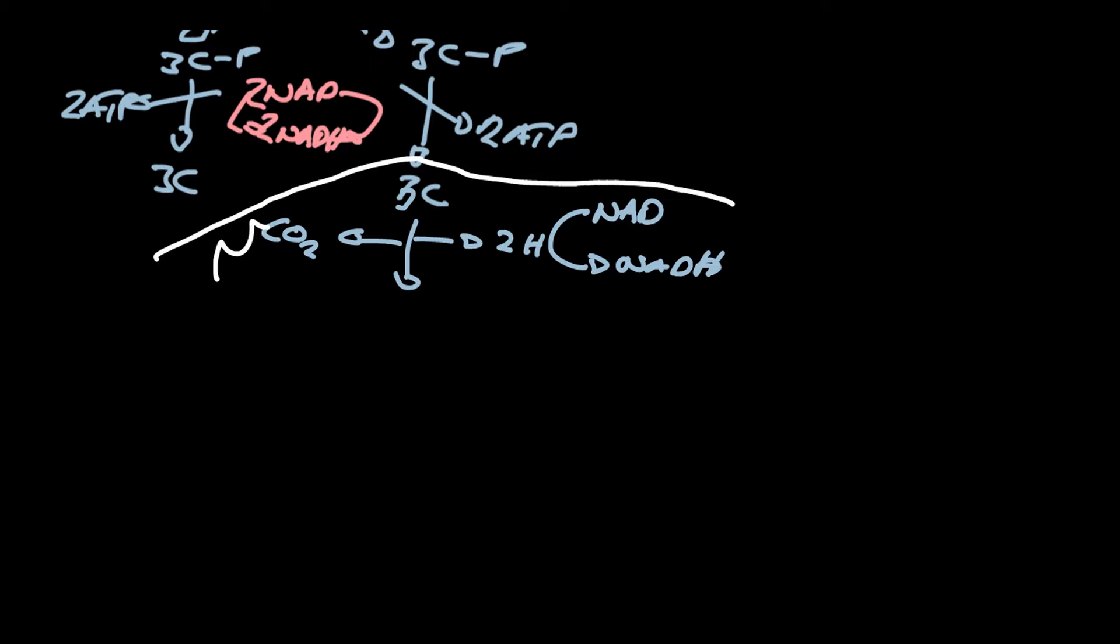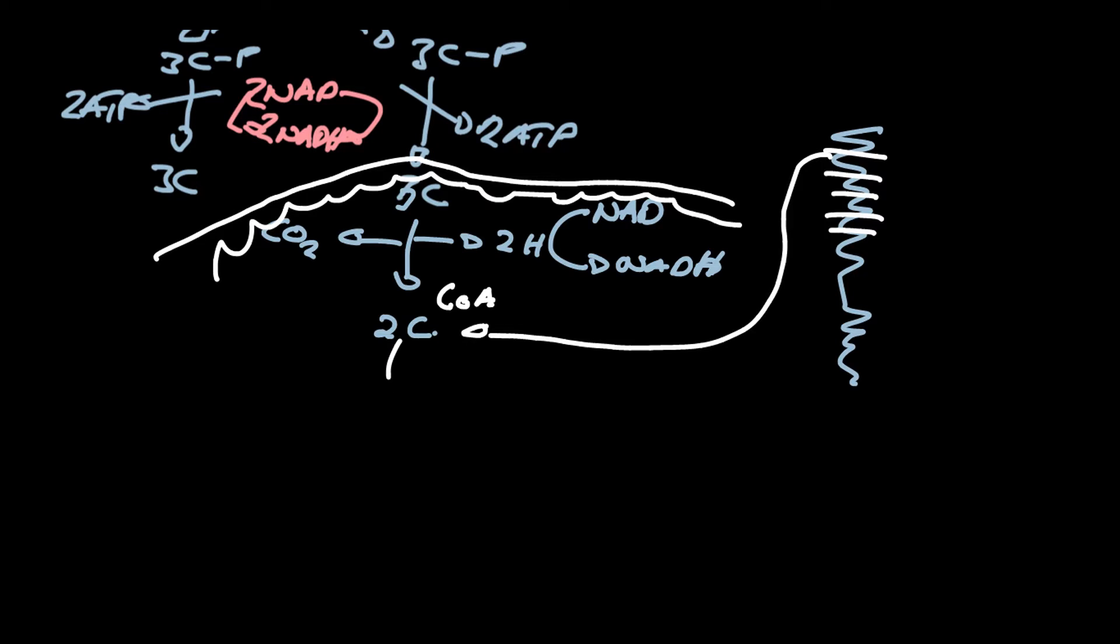It's undergoing the link reaction to produce your two carbon acetyl fragment. Now this is where the fatty acid that's been produced as a result of the hydrolysis of the triglyceride gets chopped up into two carbon fragments. And those two carbon fragments are your acetyl fragments. So the acetyl fragment is then turned into acetyl coenzyme A, and that joins with the four carbon oxaloacetate, which then powers the Krebs cycle.